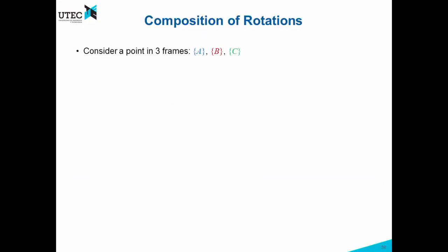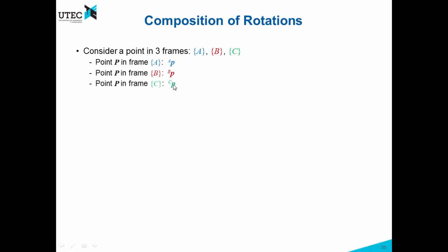Composition of Rotations. Consider a point in three frames: frame A, frame B, and frame C. Point P in frame A is represented as P_A, then we have point P in frame B as P_B, and we also have point P in frame C as P_C.